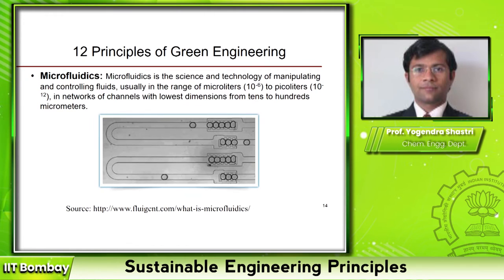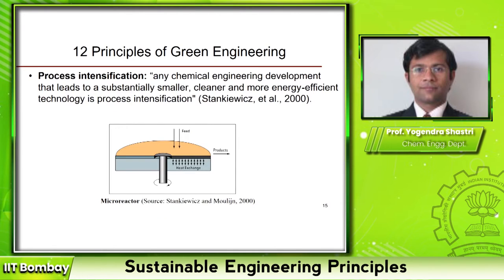Another example related to chemical engineering is process intensification. This concept is about getting reactions done or processes done at very small scale. The reason is that at very small scales, energy, mass, and reaction efficiencies are extremely high.